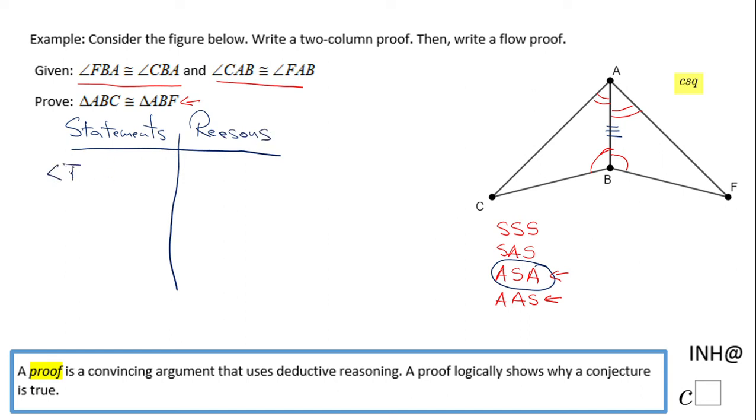What is given to us is that angle FBA is congruent to angle CBA, then angle CAB is congruent to angle FAB. And as I said, the third corresponding congruent part is that common side: AB is congruent to...